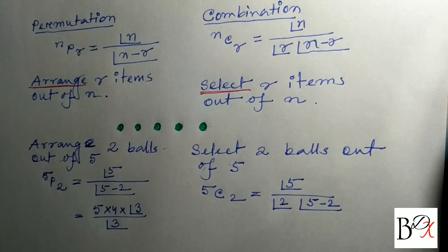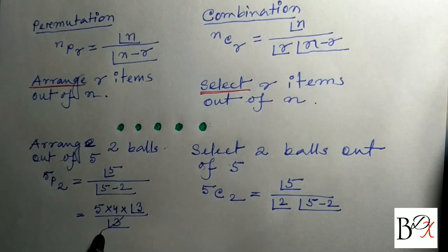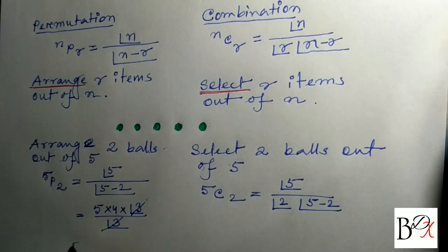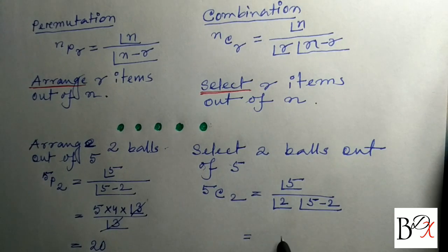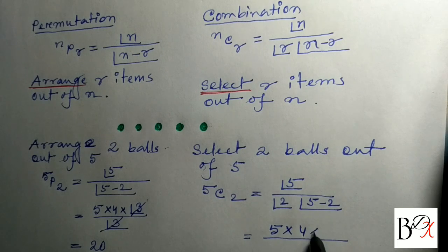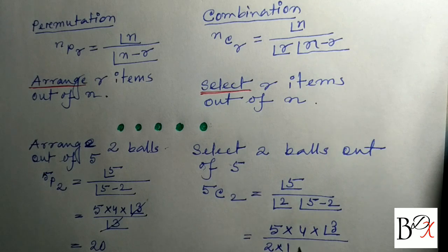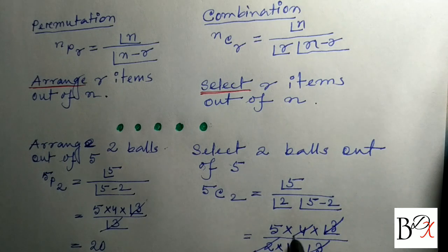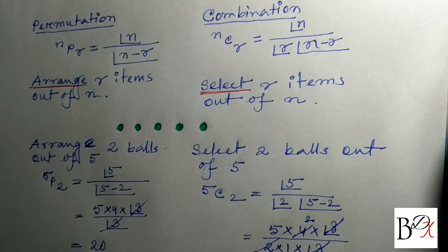Factorial 3 in the denominator equals 3 into 2 into 1. Factorial 3 in numerator and denominator cancel. So 5C2 equals 5 into 4 divided by factorial 2, which gives us 20 divided by 2, equal to 10.